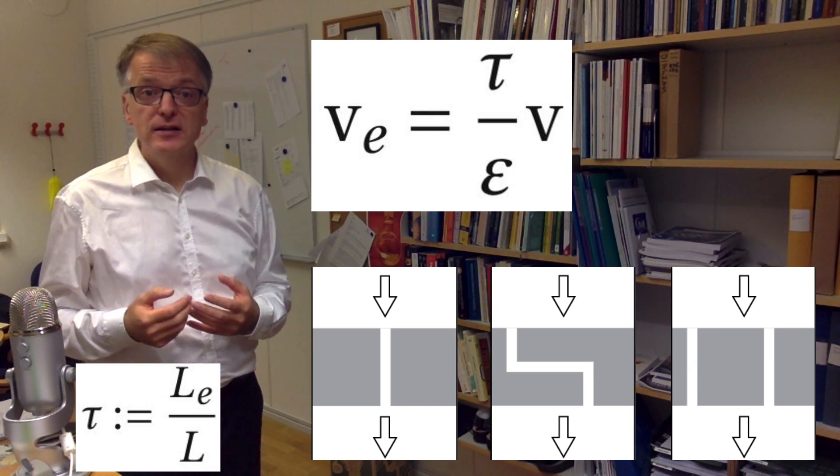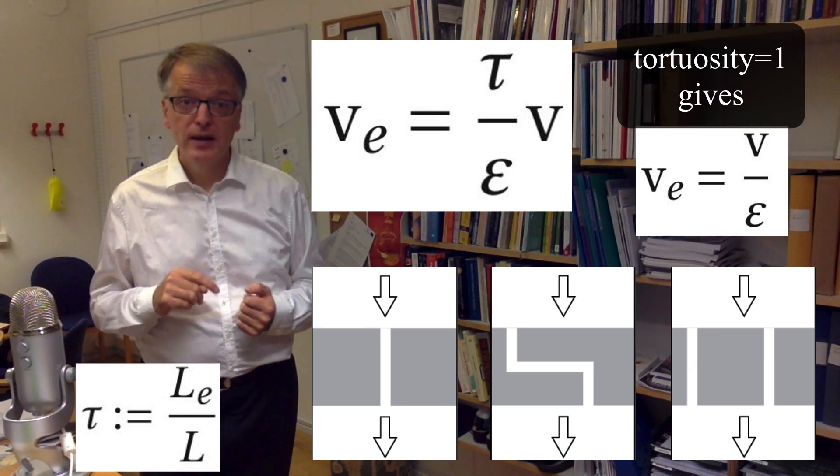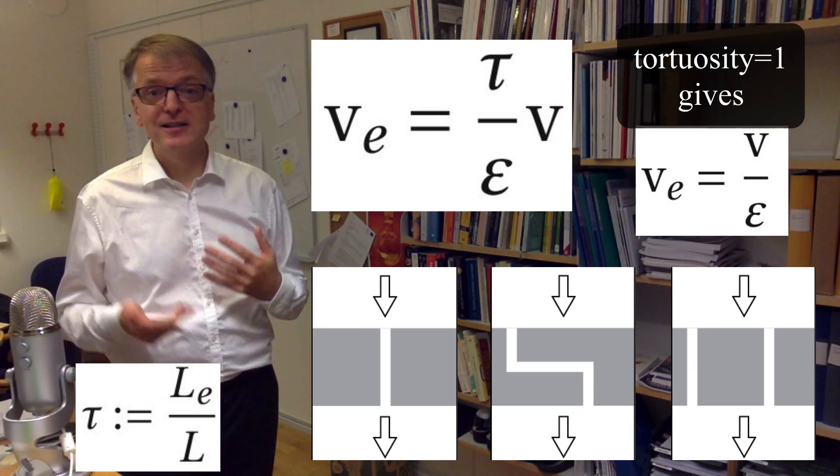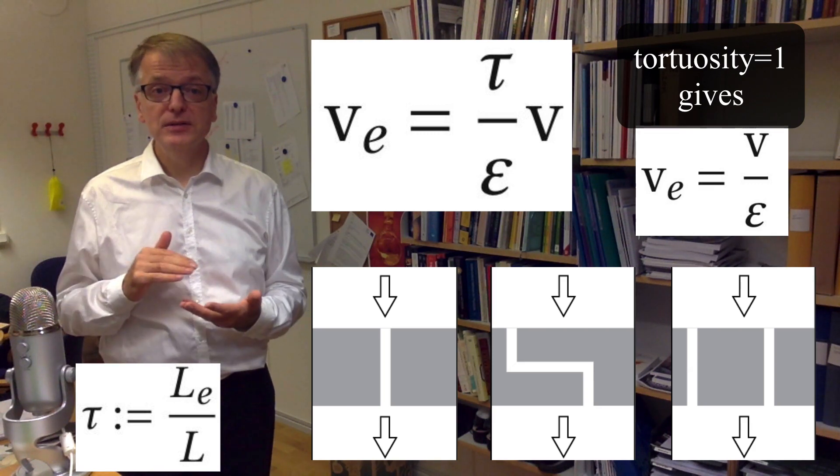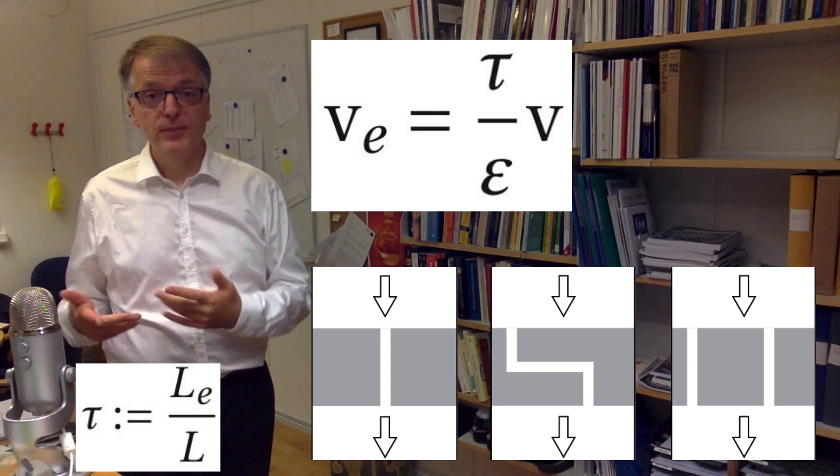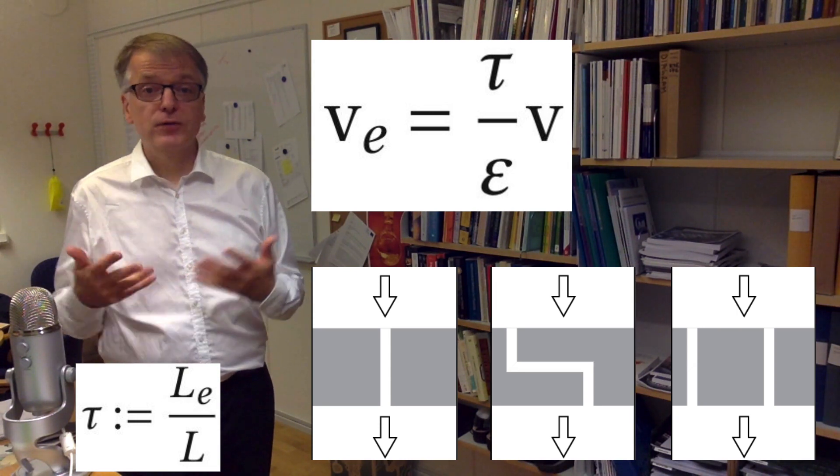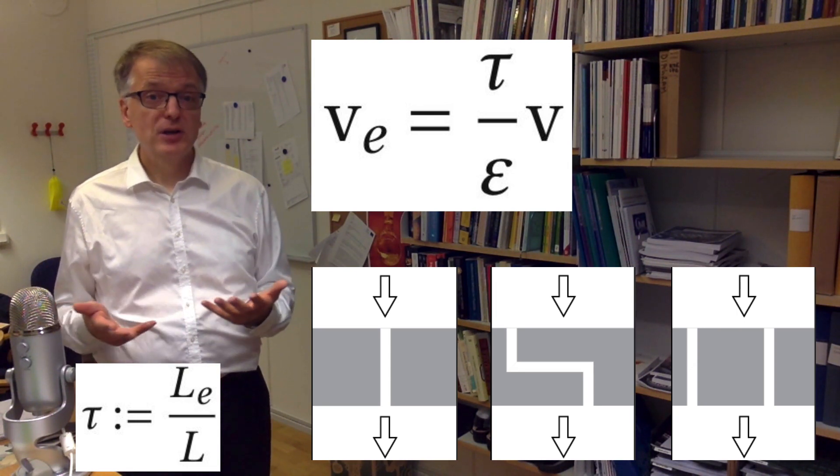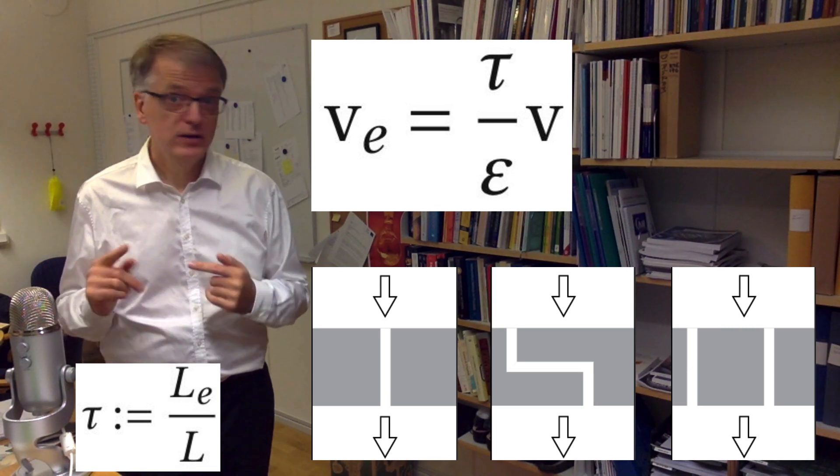In the special case that the tortuosity is 1, that is, that the channel length is the same as the thickness of the material, we see that the simpler equation is actually correct. However, the tortuosity of, for example, packed beds is typically around 1.4, not 1.